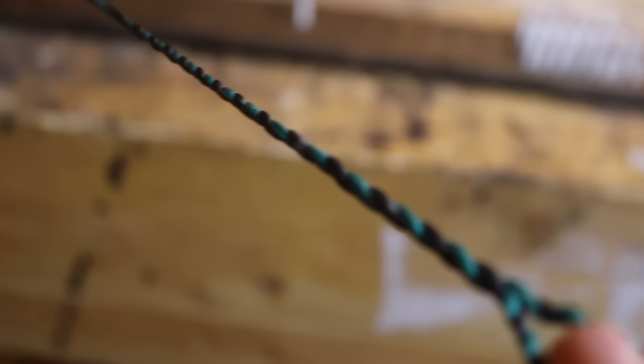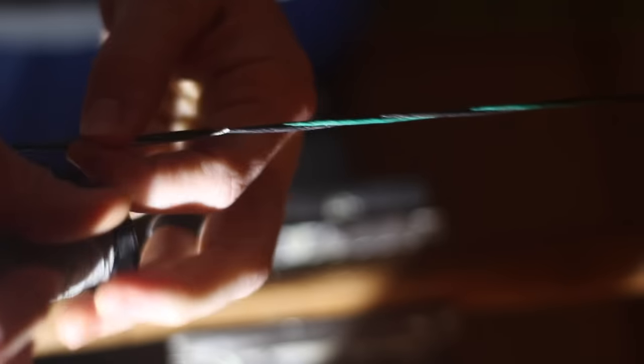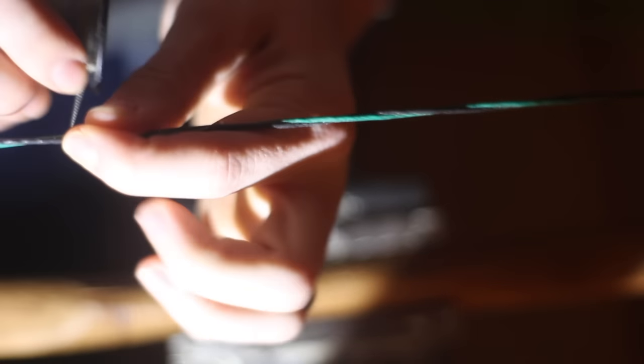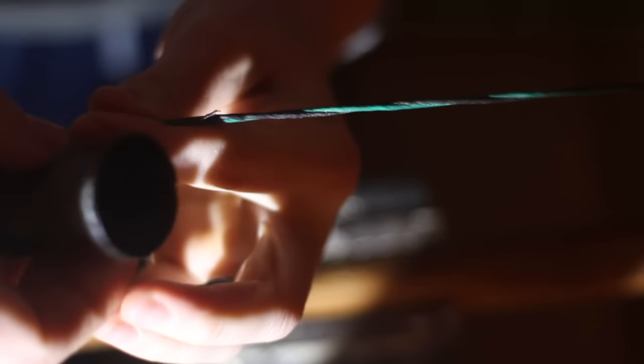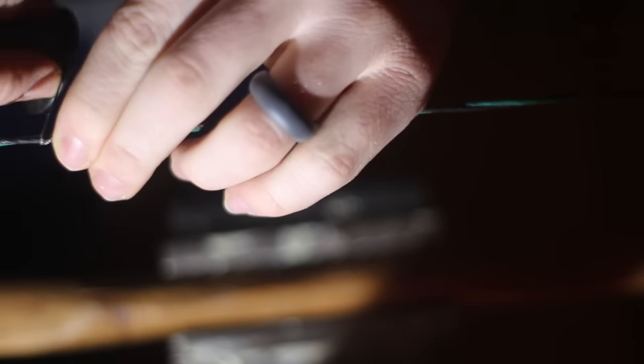Now all we've got left is to put the serving on. You're going to want to start the serving just below the handle area and work your way up past your nocking point so that the arrow can nock on the serving and then also if the string slaps against your arm it'll be along the area where the serving is rather than just the bare string.